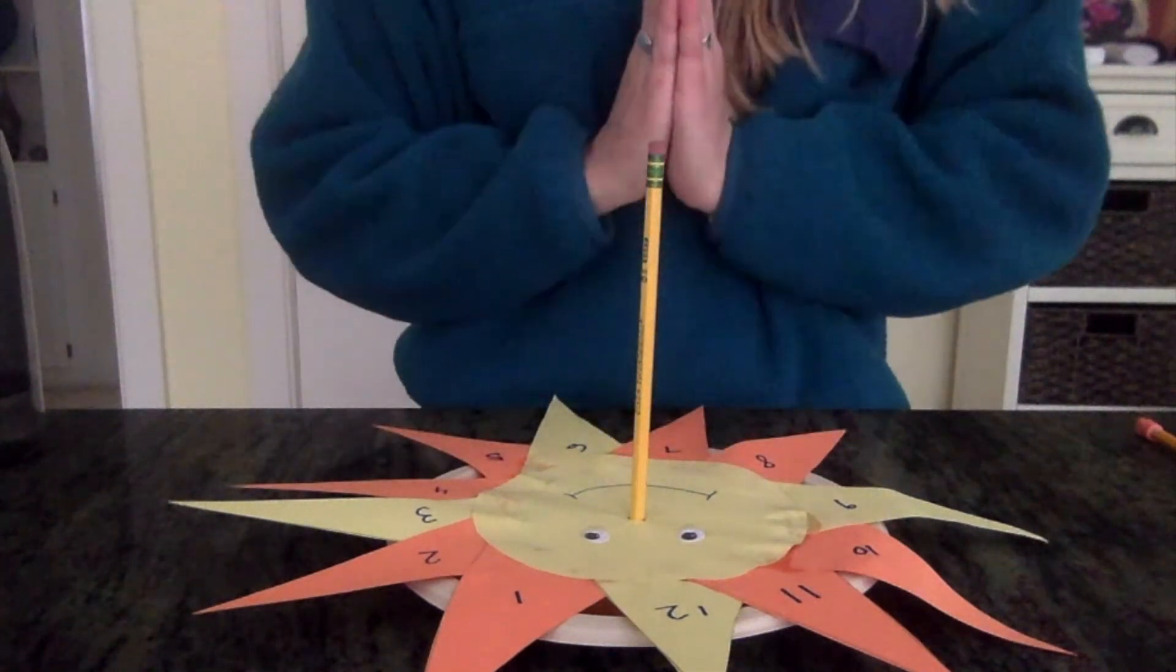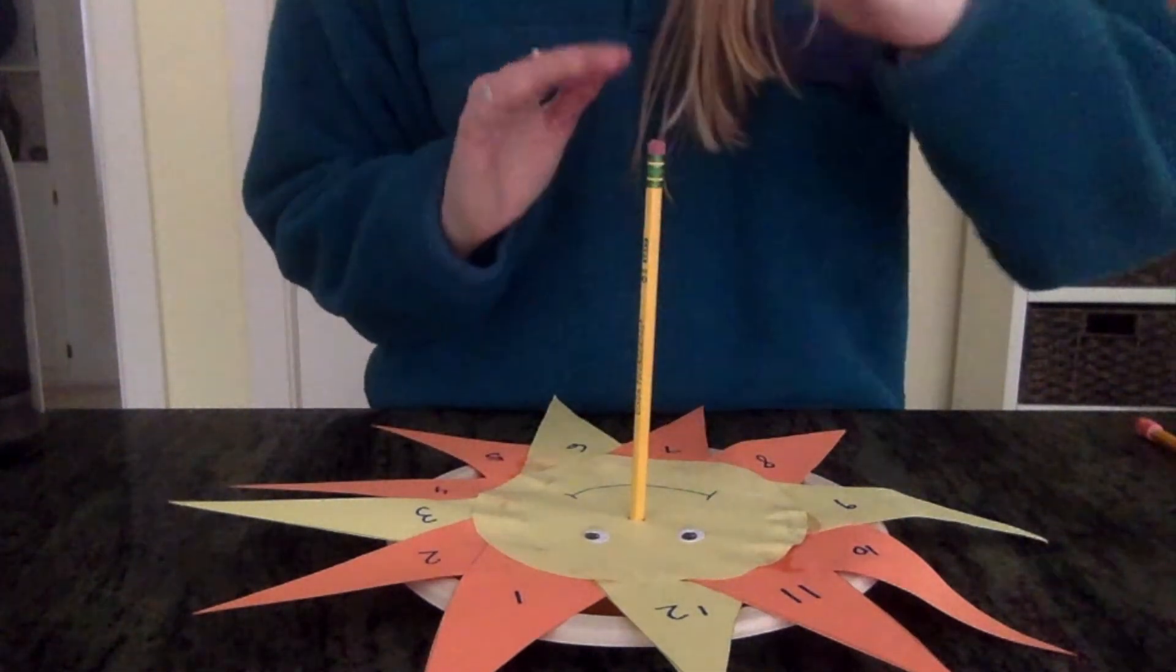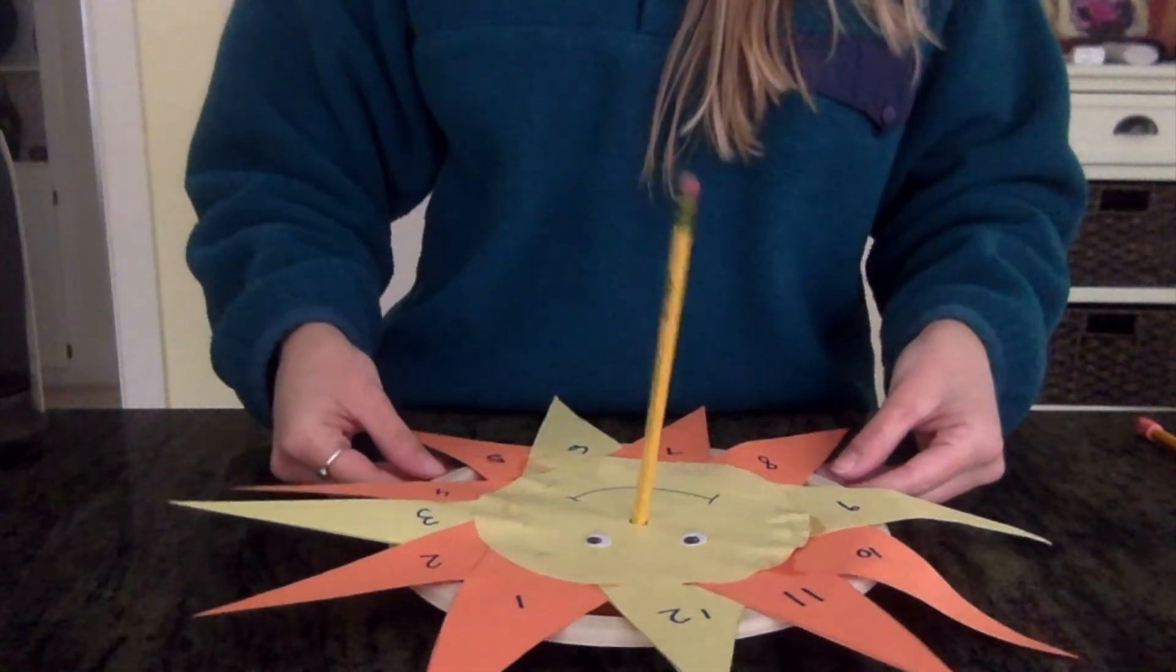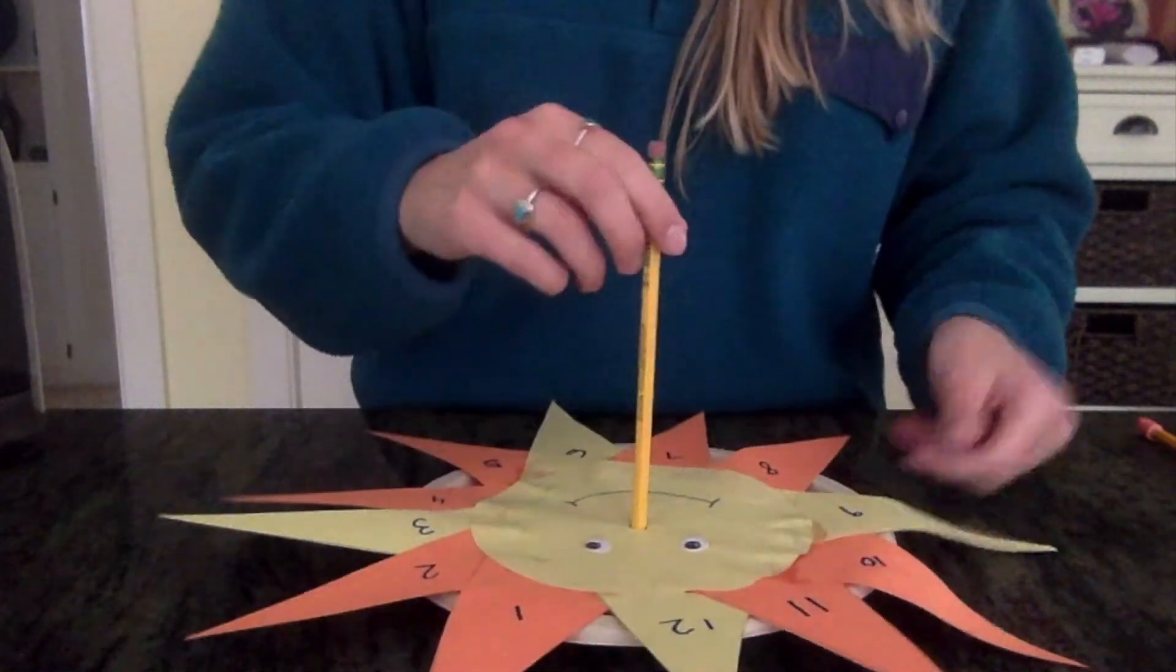And we are going to use this to tell our time. So it's sticking straight up. That way when the sun rays hit it, the shadow will indicate what time it is. Now we are going to take this outside and give it a test.